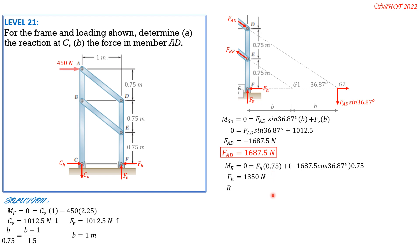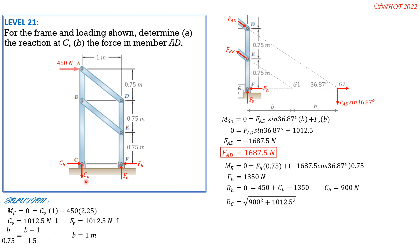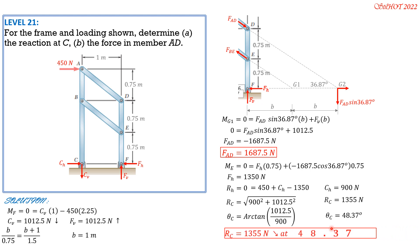Considering the entire system with summation of horizontal forces equal to zero: 450 plus C_H minus 1350 equals zero, so C_H equals 900 Newtons. With C_V equals 1012.5 Newtons, the magnitude of reaction at C is the square root of 900² plus 1012.5², which equals 1355 Newtons directed down to the right. The angle theta_C equals arctan(1012.5/900) equals 48.37 degrees. Therefore, R_C is 1355 Newtons at 48.37° to the horizontal, directed down to the right.